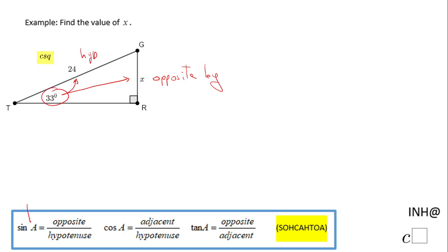So that should tell you you have to use the sine. We're gonna have sine of angle T, which is 33 degrees, equals the opposite leg which is x over 24, and I need to solve for x.